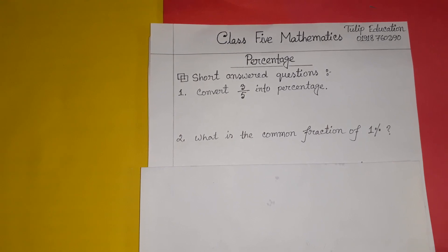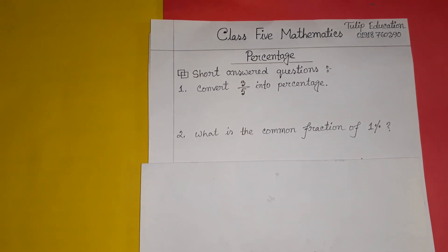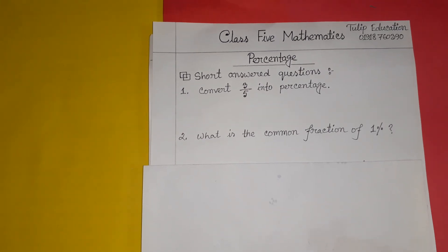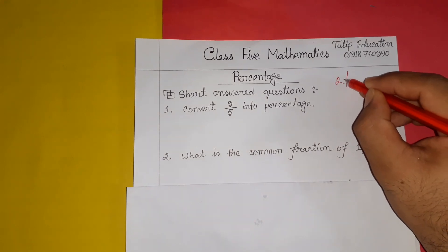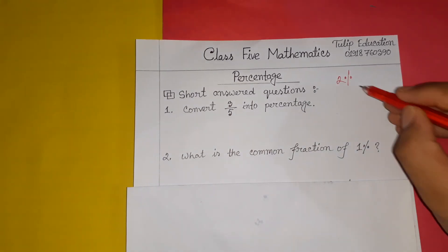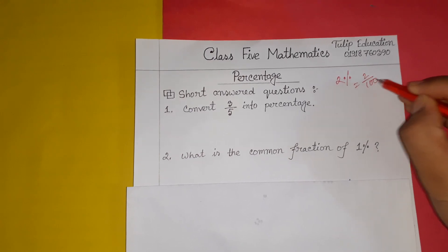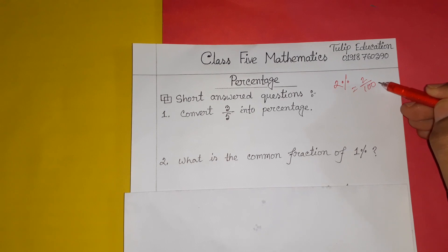Before starting to solve any short question, I would like to discuss what a percentage is. Percentage is a kind of ratio or fraction where we always get 100 as a denominator. For example, 2% means 2 divided by 100 — that is how we get 100 as the denominator.